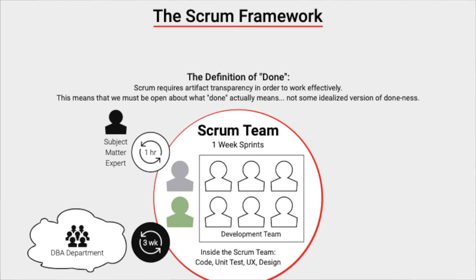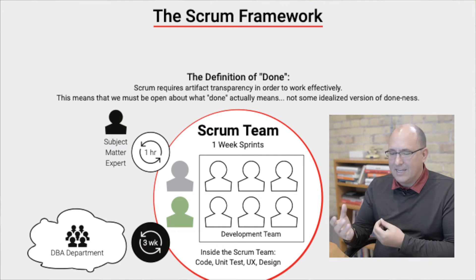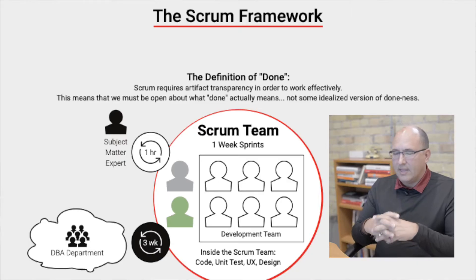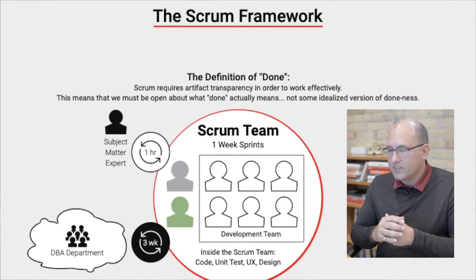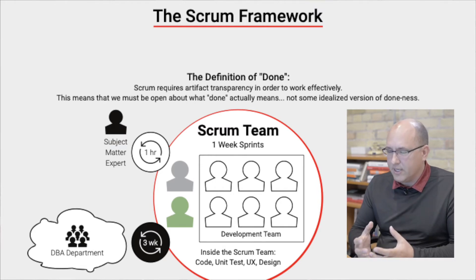There might be other things outside the team that aren't as good. In software development in large organizations, there's often a separate DBA department for database administration. Your Scrum team doing development needs to ask that department for changes to the database, and that department has a three-week-long service level agreement. This means that if the team needs database changes made within a sprint, it's not going to happen — it'll take a request and three weeks, possibly pushing into the third sprint after the current one.